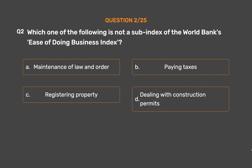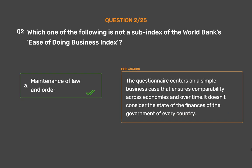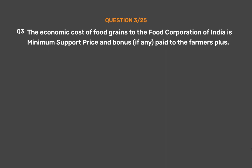The correct answer is Option A: Maintenance of Law and Order. The questionnaire centers on a simple business case that ensures comparability across economies and over time. It doesn't consider the state of the finances of the government of every country.